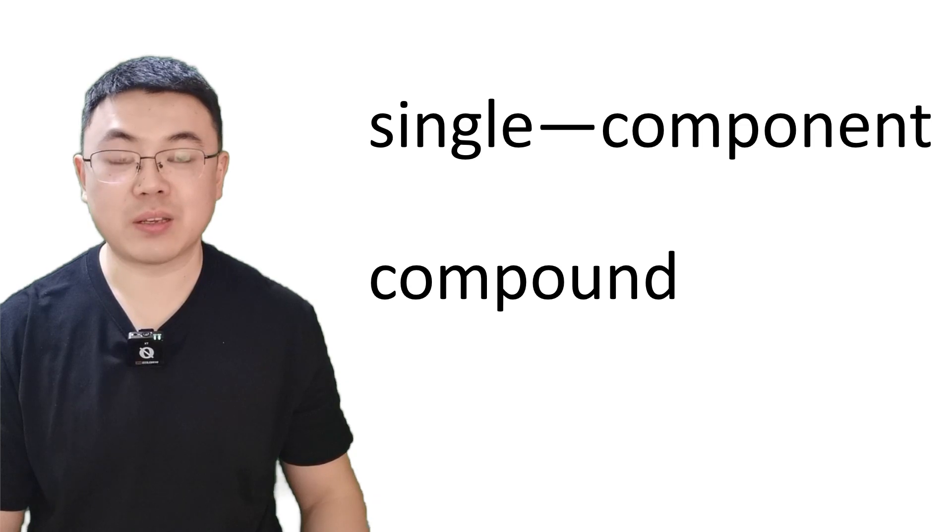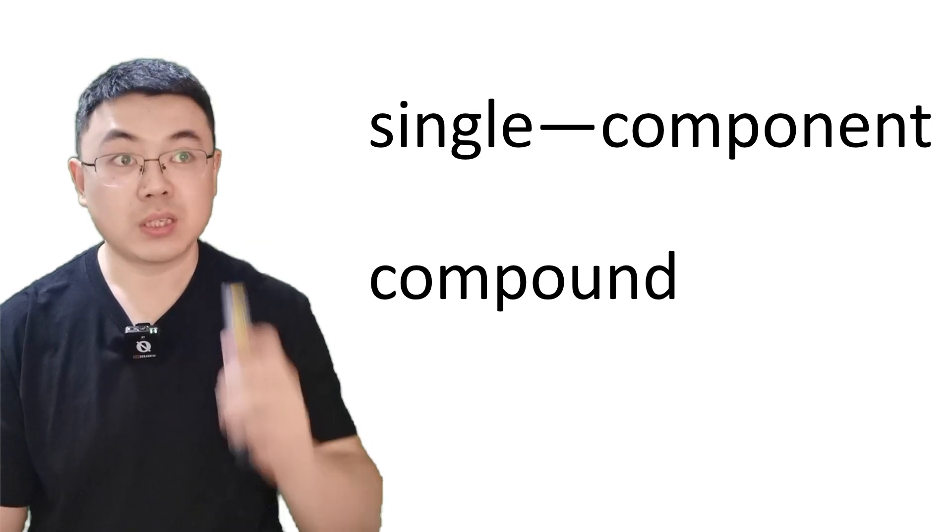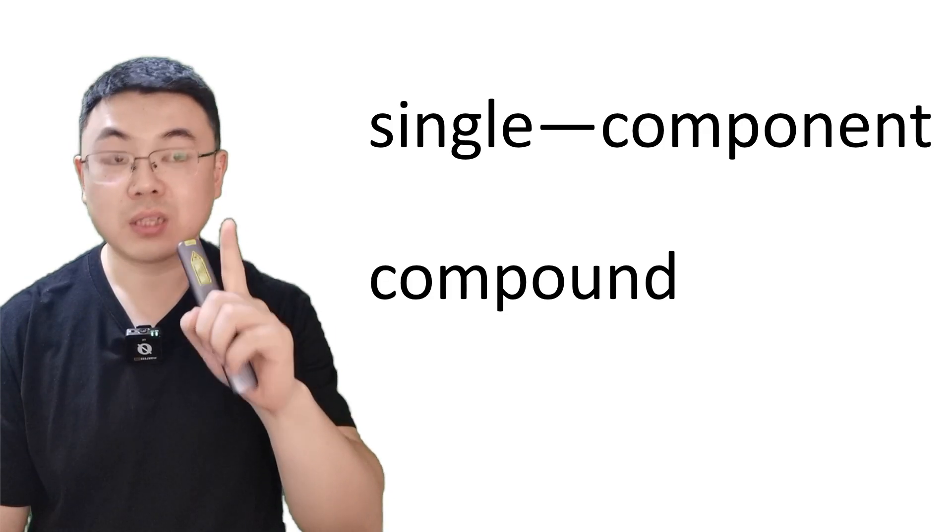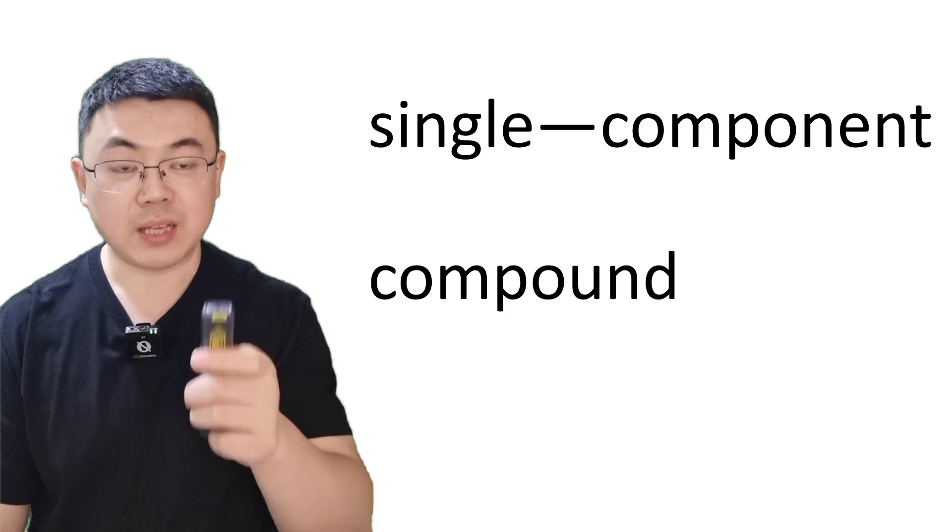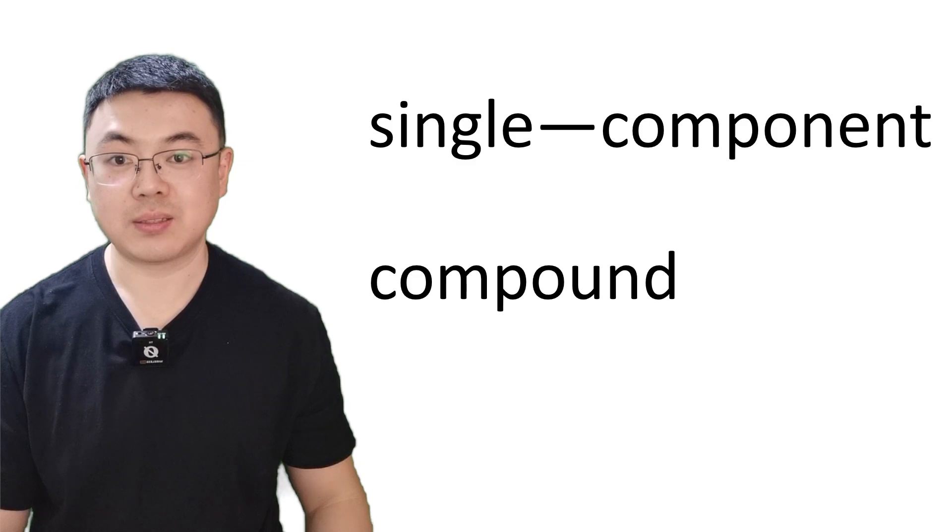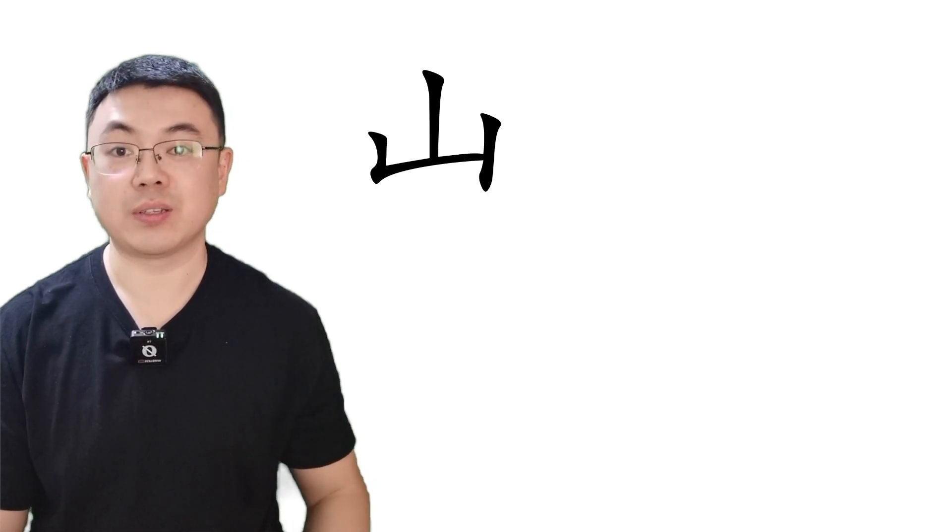First, let me explain. There are two types of structures for Chinese characters: single component characters, which have one component, and compound characters, which have two or more components. And here are the five characters we are going to learn today.